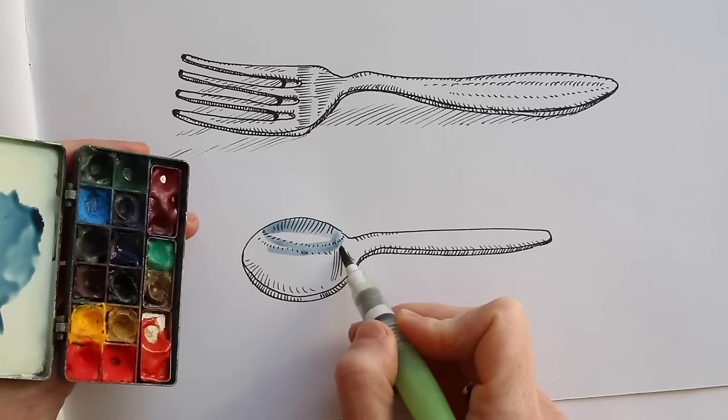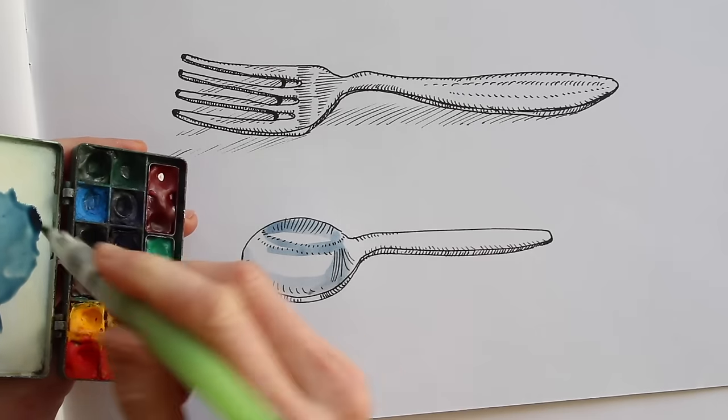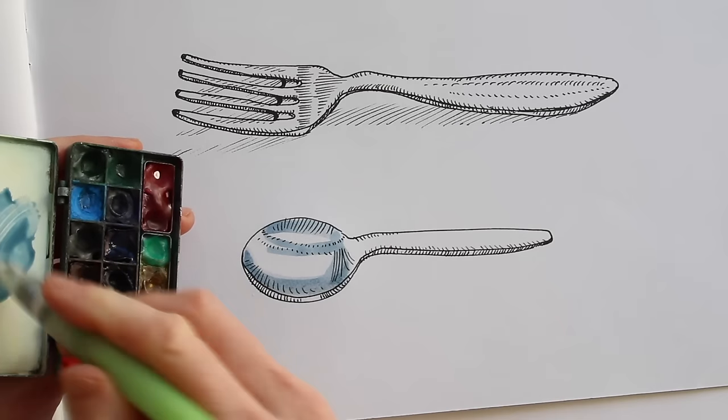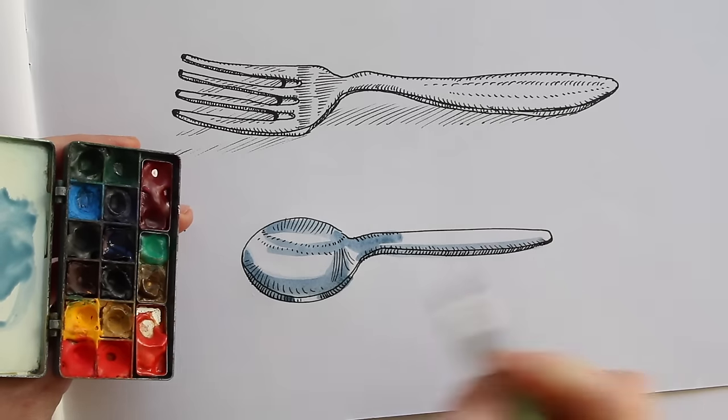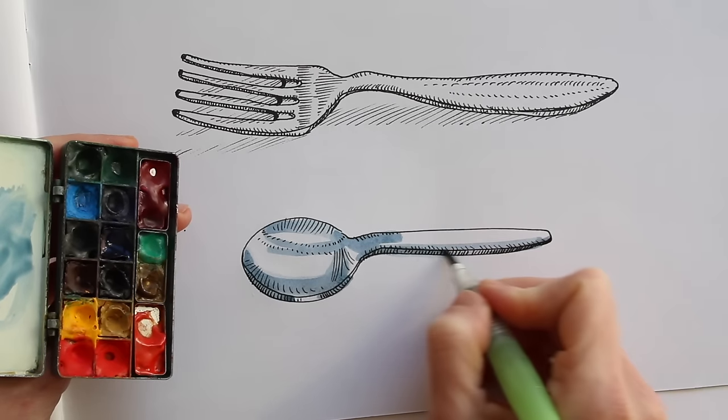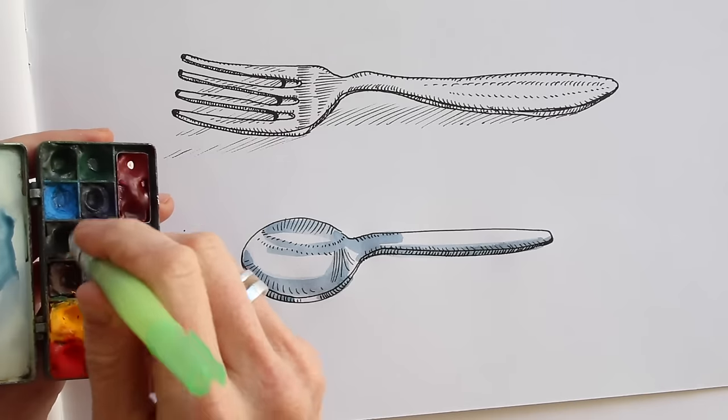Again, leaving whites for the lighter bits is key here. Keep looking at your subject as you do this. Don't assume anything, just paint the darker bits. Again, add a drop shadow to give the subject weight and context.